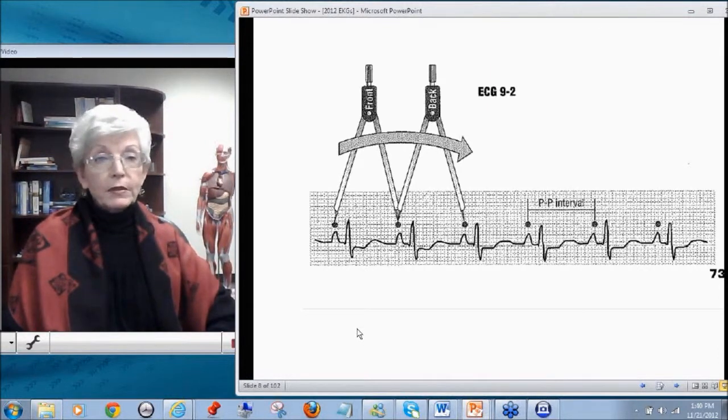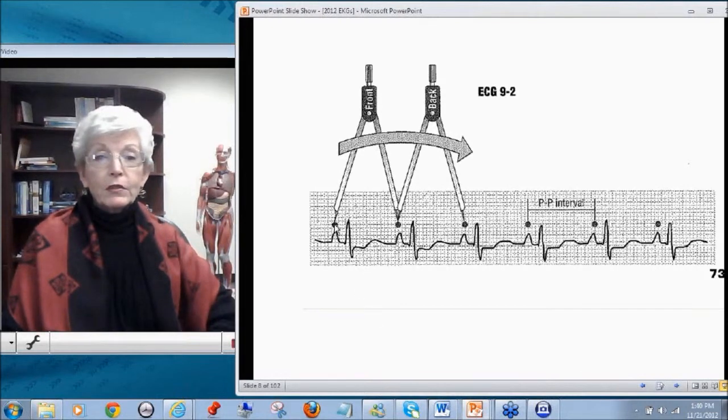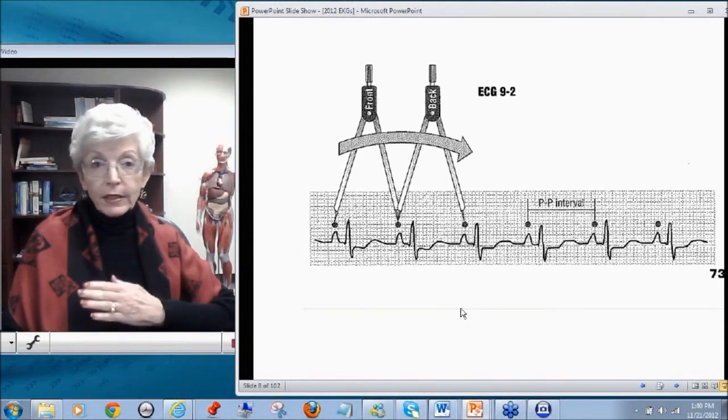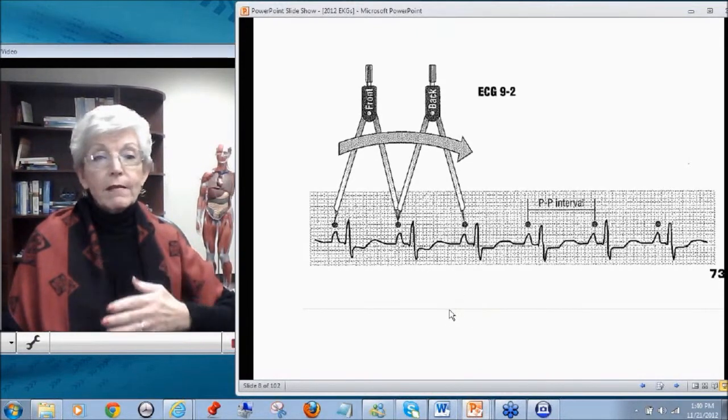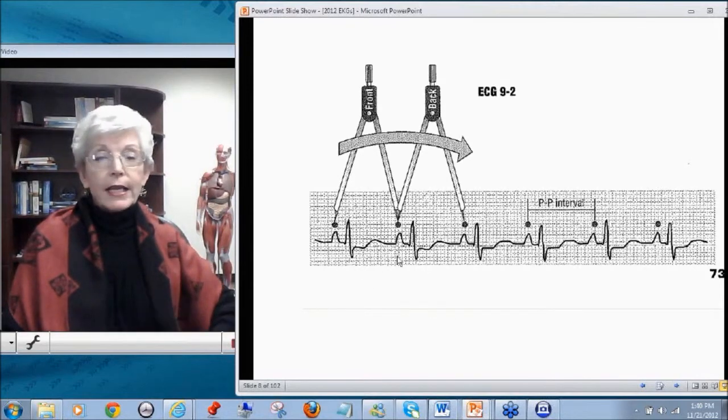If this were normal sinus rhythm, you could just move these calipers now to the R wave of the QRS and not reset them, and the R to R intervals would all march out and be the same. And then, without moving your calipers at all, just move it to the T wave, and your T to T intervals would be all the same. Totally rhythmic, totally exactly the same in pace.